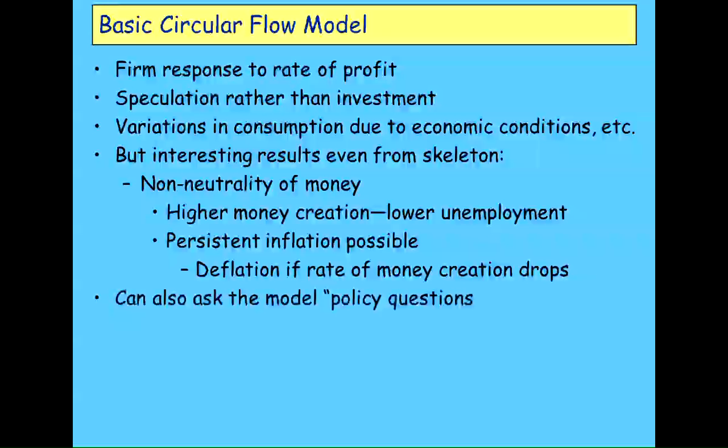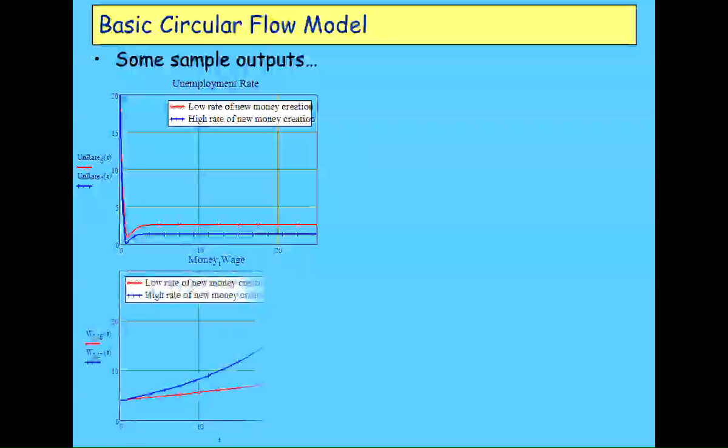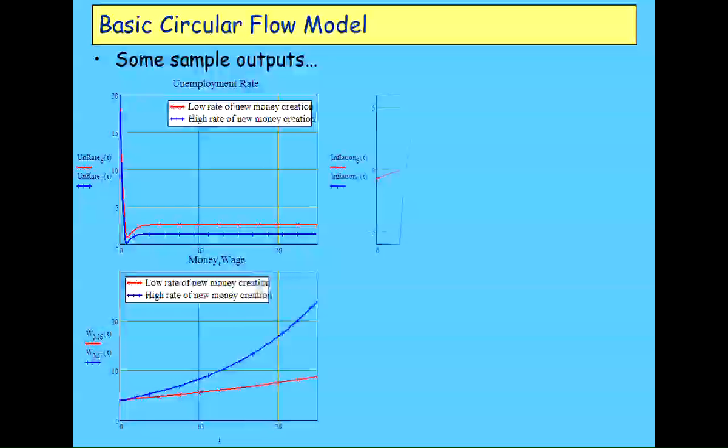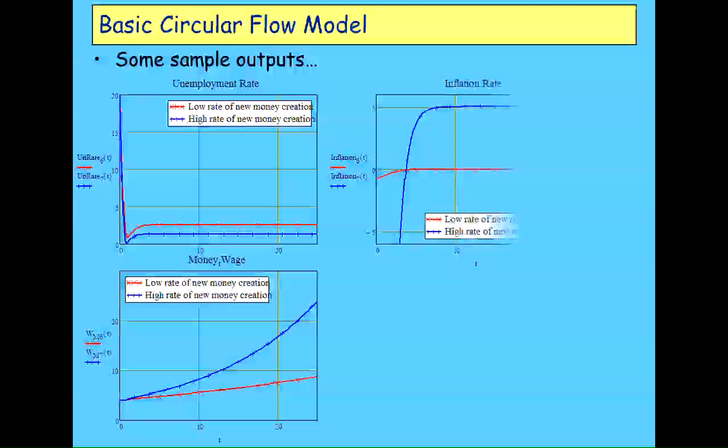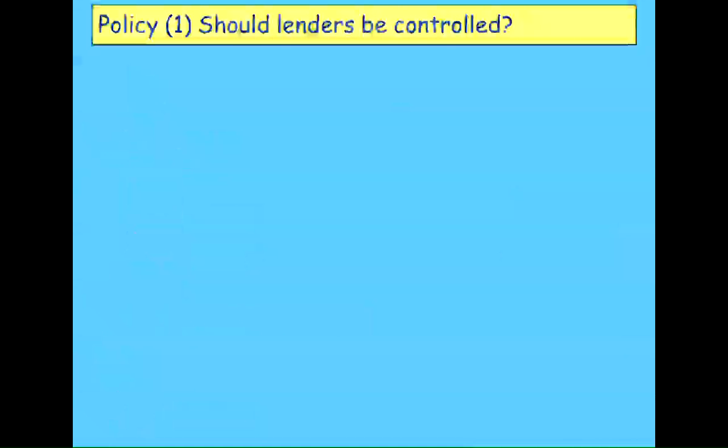This is some sample outputs from the MathCAD version of the model. That's the unemployment rate with a low rate of money creation or a high rate. You get a lower level of unemployment with a high rate of money creation, higher money wages, a high rate of inflation, and also a higher real wage, largely because employment's driven up to a slightly higher level, and therefore you get that boost of wages coming out.